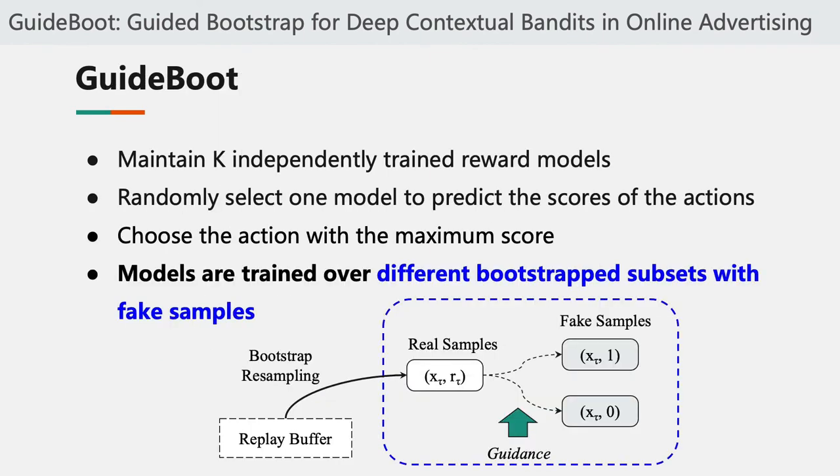Let me briefly describe our GuideBoost method. GuideBoost maintains K independently trained reward models, and then we randomly select one model to predict the scores of the actions, and finally choose the action with the maximum score. These three steps are exactly the same as in the traditional bootstrap exploration method. But in contrast to previous methods, we not only use different subsets of collected samples to train the models, but also randomly generate a small number of fake samples while training, so as to enable distributional predictions and preclude overfitting.